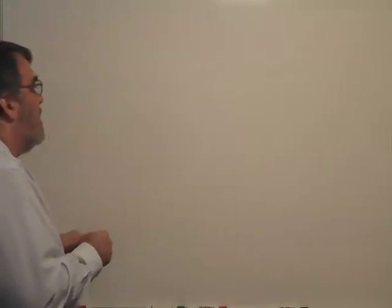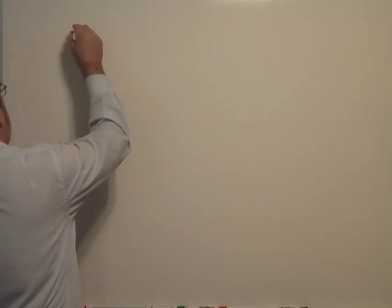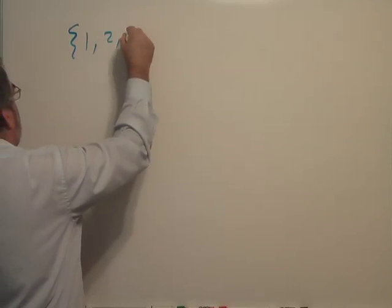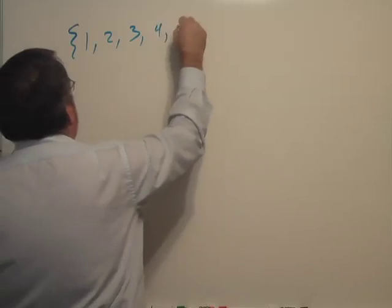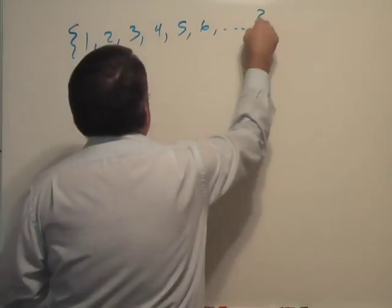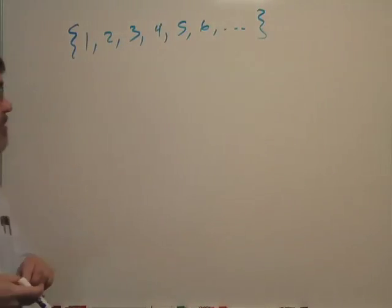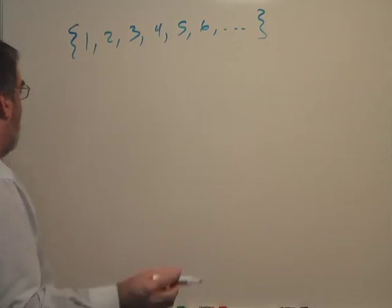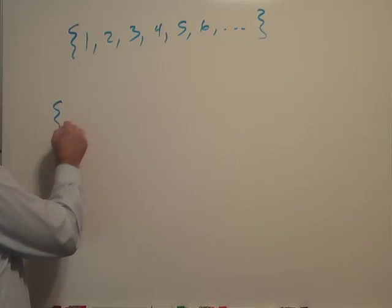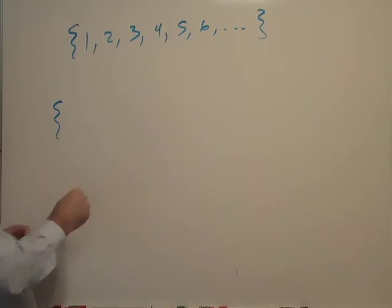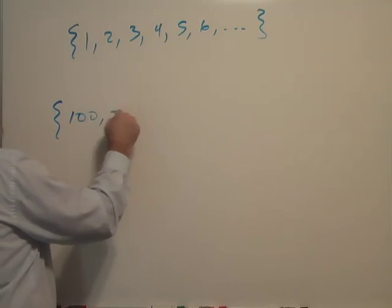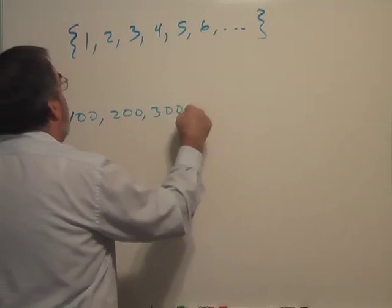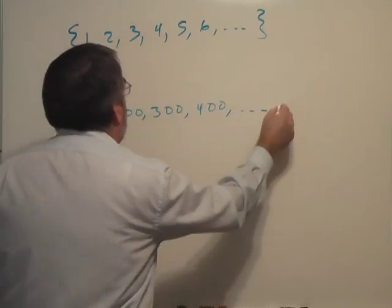We can count in the infinite sense. Let's take the natural numbers, the ones we count with: 1, 2, 3, 4, 5, 6, and that means it goes on forever. These are called the counting numbers or the natural numbers. And consider a set of numbers that are multiples of 100: 100, 200, 300, 400, and so on.